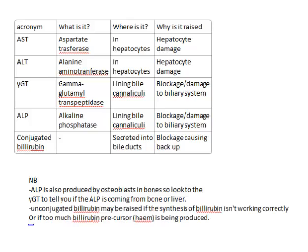The second point is that we've talked about conjugated bilirubin, but you can get a raised level of unconjugated bilirubin in two situations. Firstly, if the conjugation of bilirubin within the liver isn't working correctly — that can happen with things like hepatitis or enzyme defects. Or you can get a high unconjugated bilirubin if there's too much of the precursor to bilirubin hanging around. Bilirubin is made from haemoglobin breakdown, and so if there's too much haemoglobin, for example in haemolysis, you can get a raised unconjugated bilirubin level.